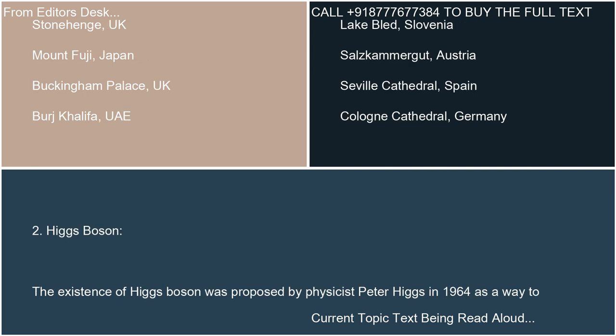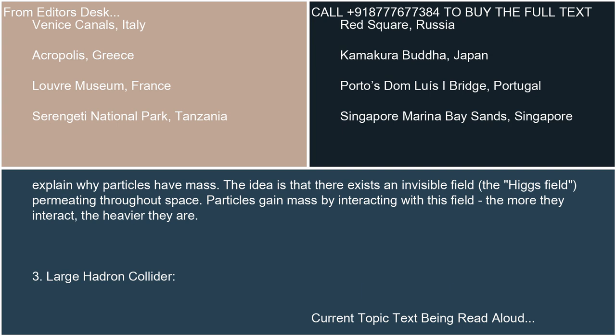The existence of the Higgs boson was proposed by physicist Peter Higgs in 1964 as a way to explain why particles have mass. The idea is that there exists an invisible field — the Higgs field — permeating throughout space. Particles gain mass by interacting with this field; the more they interact, the heavier they are.